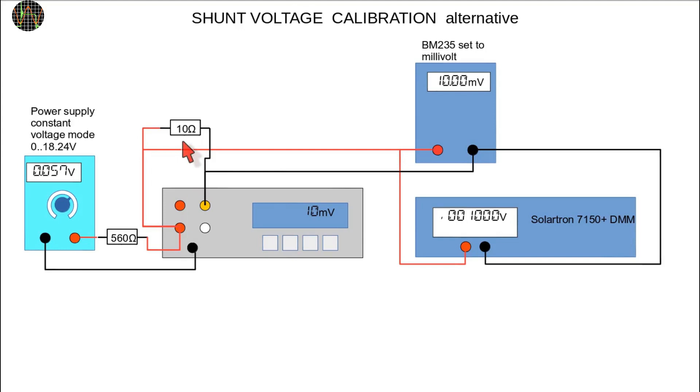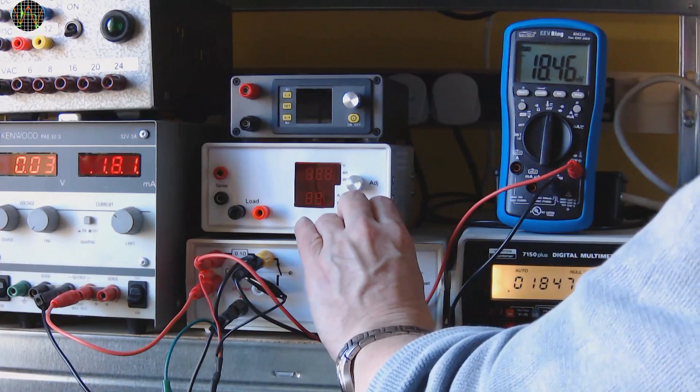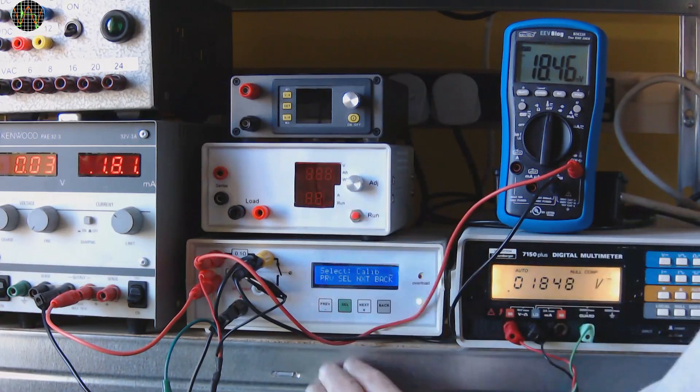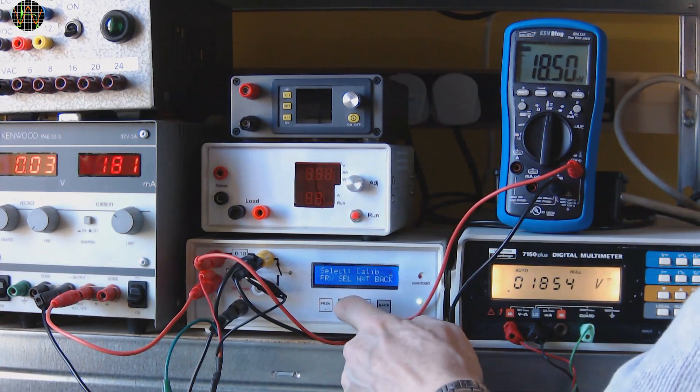We only use it temporarily for this setup and as I explained the shunt voltage calibration is independent of the actual value of the shunt resistor. Selecting the calibration menu and shunt voltage A for the first calibration.